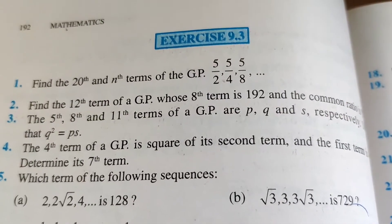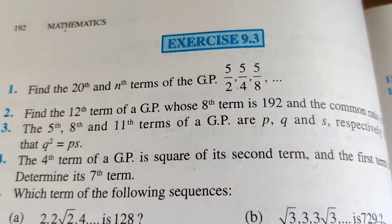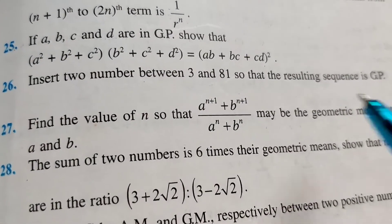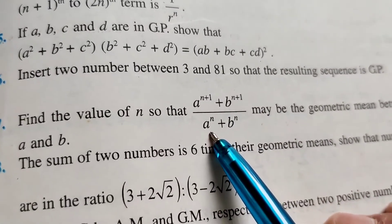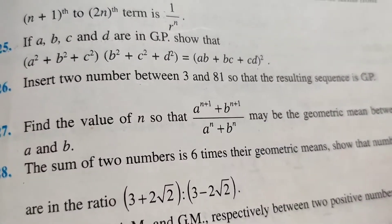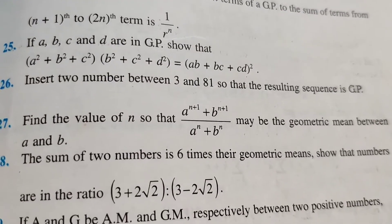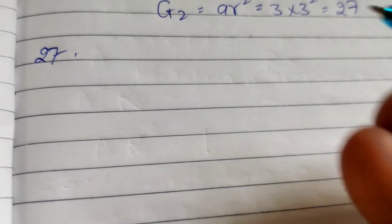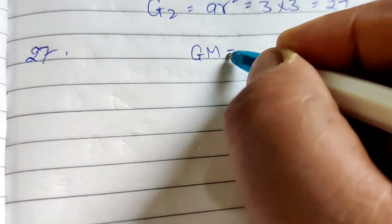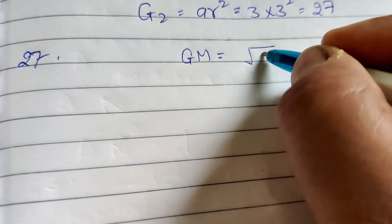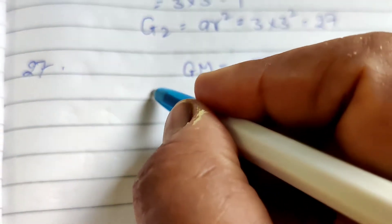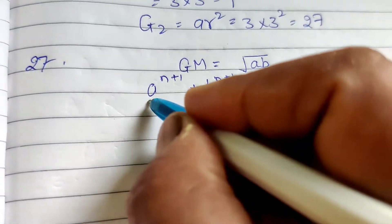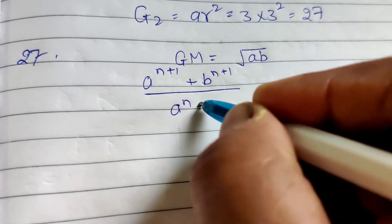Exercise 9.3, question number 27: Find the value of n so that (a raised to power n+1 plus b raised to power n+1) divided by (a raised to power n plus b raised to power n) may be the geometrical mean between a and b. We know that the geometric mean of a geometric progression is root(ab). It is given that the expression equals under root ab.